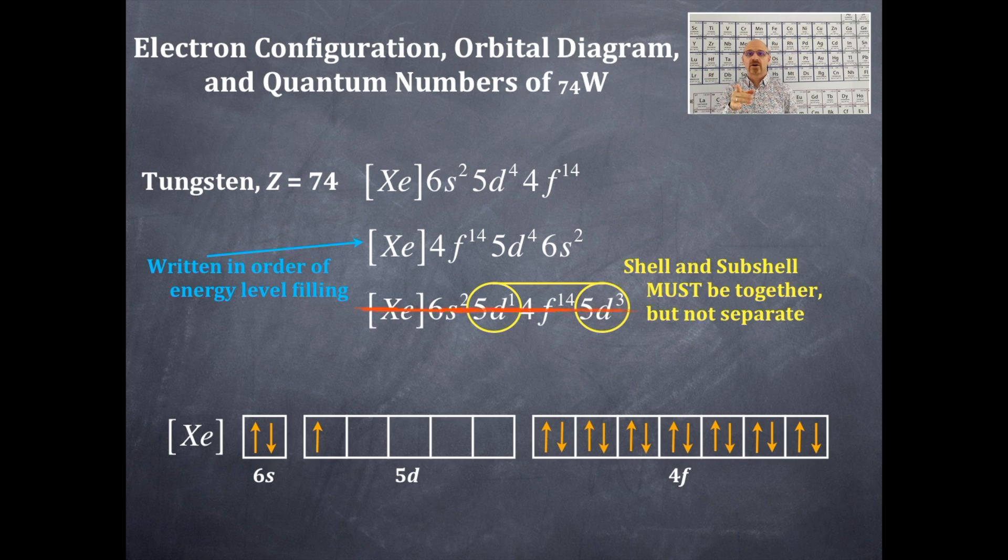Now you can come back and start filling in the other electrons up to tungsten, and you've got three more to do. It's still in the 5d: 5d², 5d³, 5d⁴. That's the order of filling.